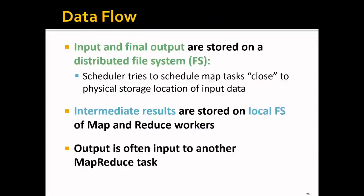In terms of data flow, the input and final output are stored on a distributed file system — persistent storage. The scheduler will try to schedule map tasks close to the physical storage location of the input data. We don't need multiple copies of map tasks, as that would waste computation. Intermediate results are stored on the local file system of MapReduce workers.